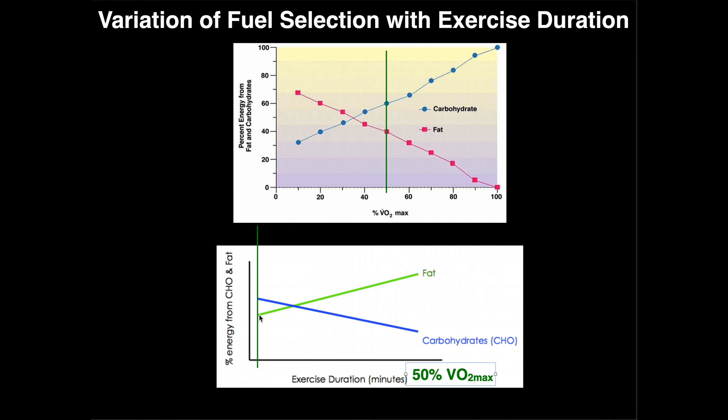But let's suppose we go maybe an hour into that exercise. Now an hour in, we're maybe right here. Well maybe at that point they have an equal contribution of fat and carbohydrates. That's because even though we started with more reliance on carbohydrates, as the exercise's prolonged we lose that contribution of carbohydrates in favor of fats.